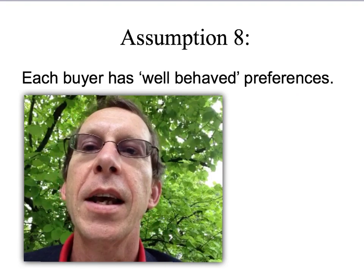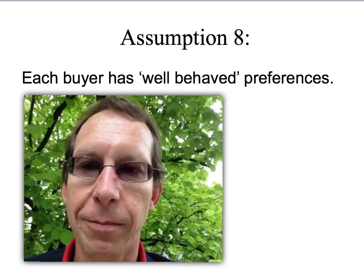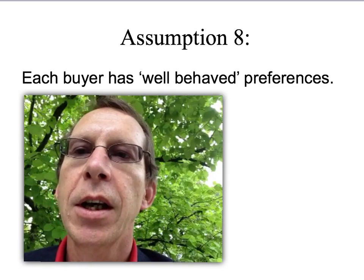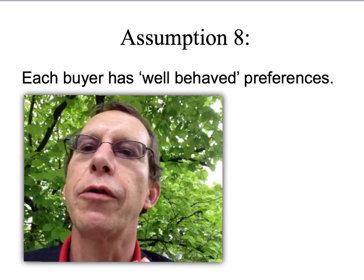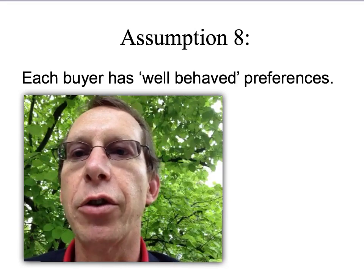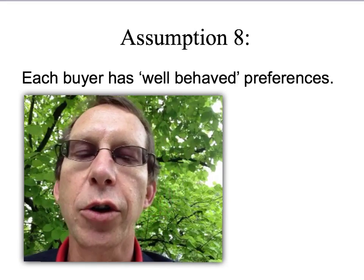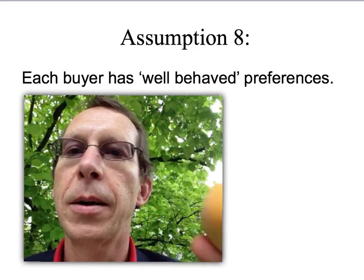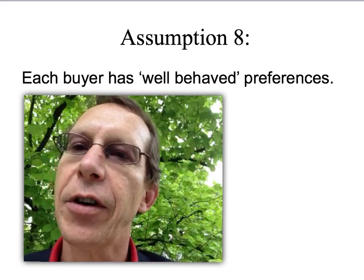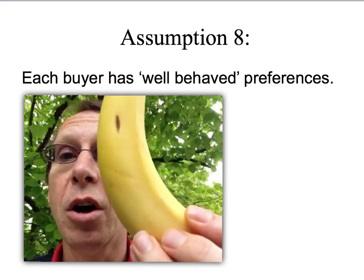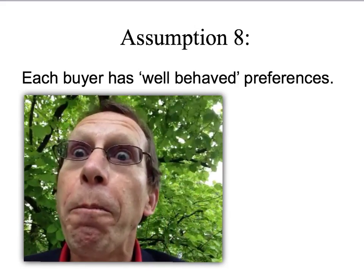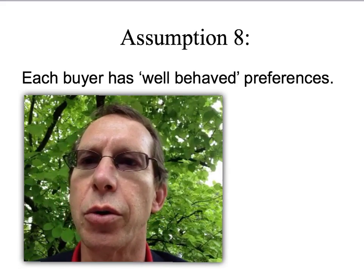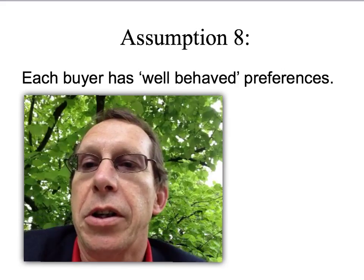Our next assumption is that buyers have well-behaved preferences. You'll find out more about this in later courses, but let me give you a feel for it now. Suppose I give you the option of choosing one piece of fruit from three choices: banana, apple, or peach. Let's say you choose the banana. As you go to grab it, I say I've already given the peach away — I shouldn't have offered it to you.